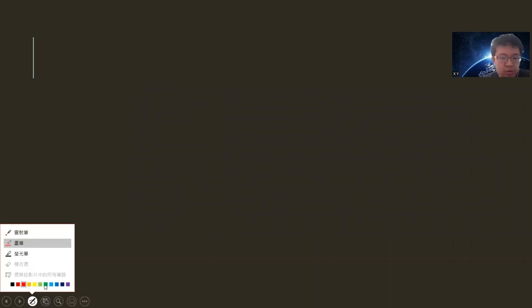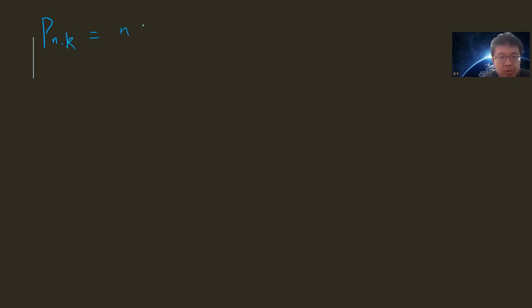Okay, so in general, if you want to solve this kind of question, you just start from a small case, but you need to write down the equation. It's exactly like dynamic programming in computer science. So my idea is to let p(n, k) be the probability that after n throws she scored k points. And our goal is to find p(100, 50).